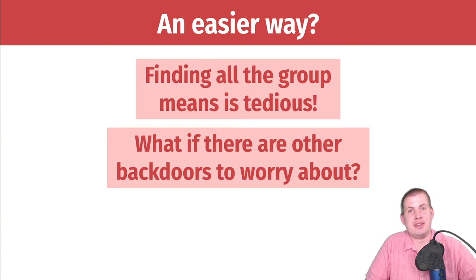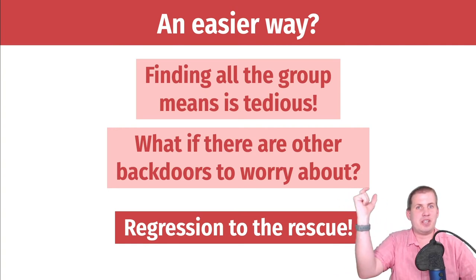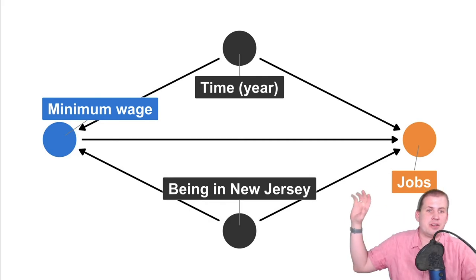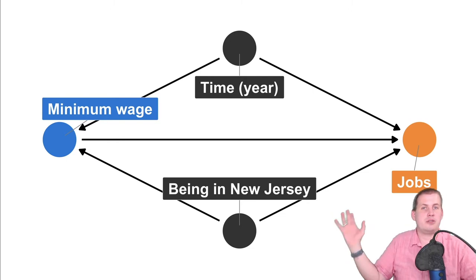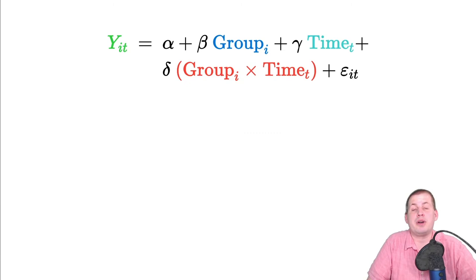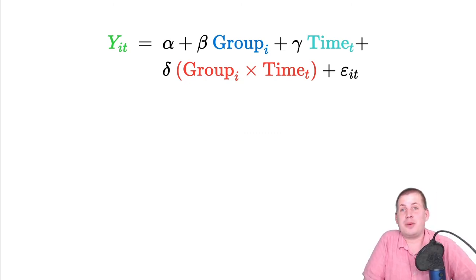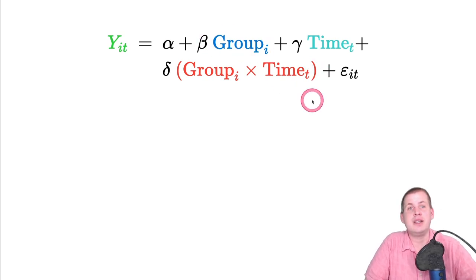We can use regression for difference-in-differences because this is why we talked about interaction terms — it's how you find that combination of treatment and time. Going back to the DAG, we have confounders of before-and-after (time) and being in New Jersey (location/group). We could deal with those by including them in a regression model. These are all indicator variables — all binary — so we don't need to worry about linearity assumptions. We can just include them as control variables, which adjusts for those nodes in the DAG.